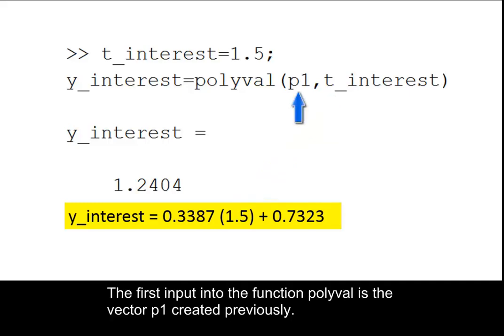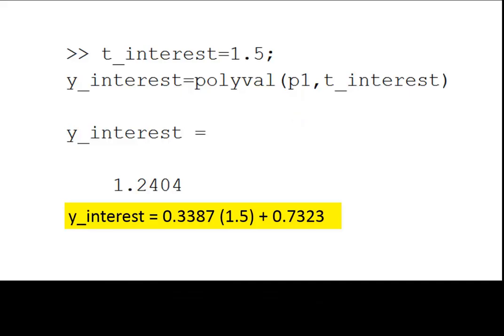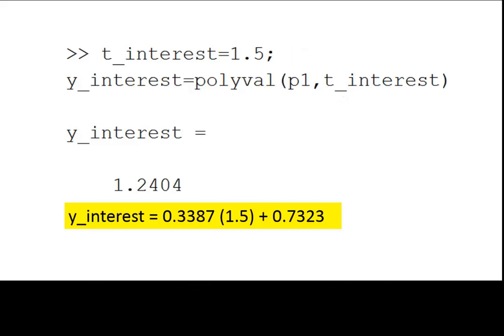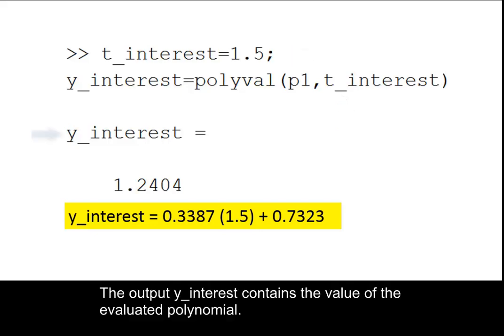The first input into the function polyval is the vector p1 created previously. The second input into the function polyval is the variable t interest that was defined as 1.5. The output y interest contains the value of the evaluated polynomial.